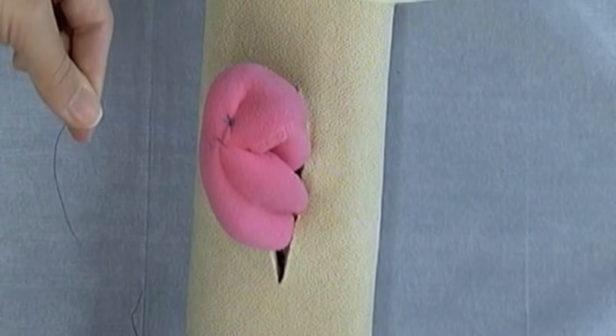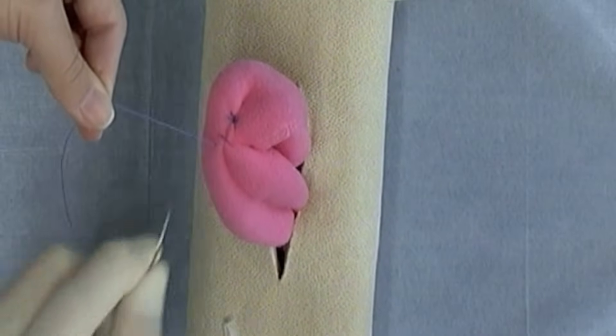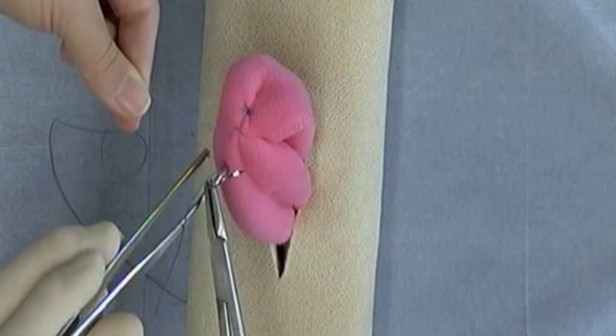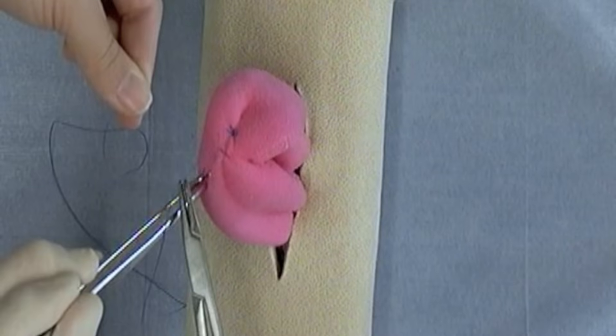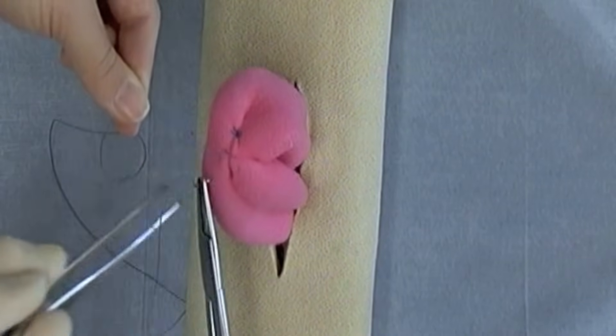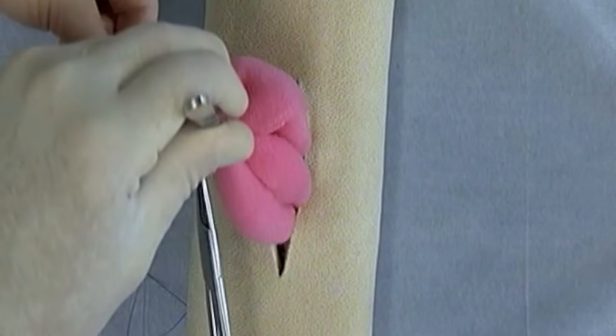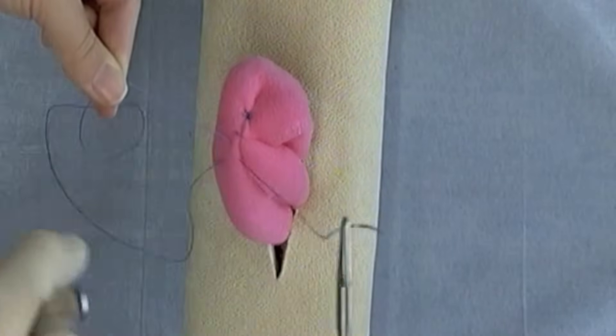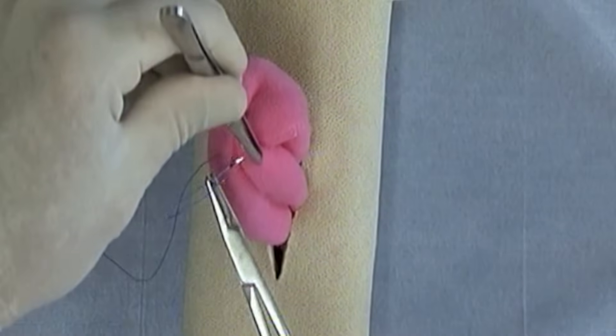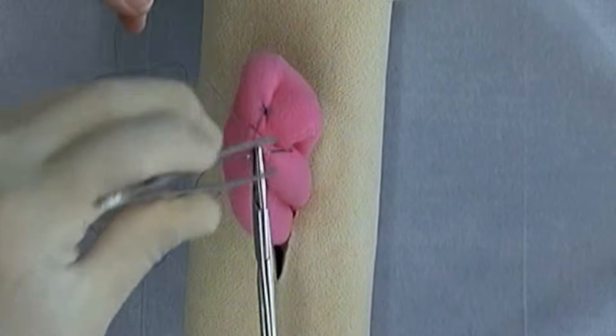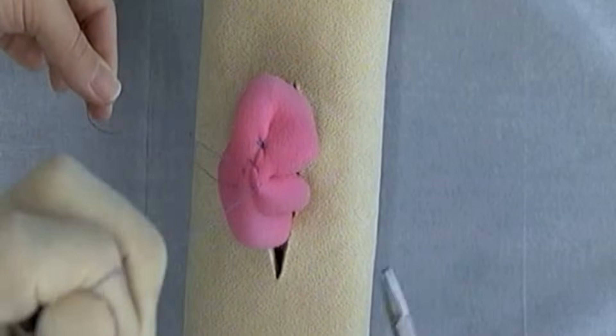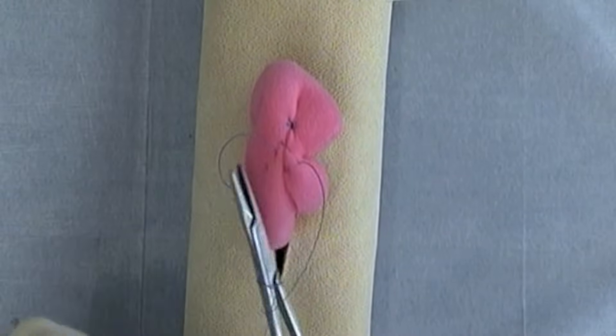And then to end this pattern I'm going to reverse and I'm going to in backhanded fashion take my final Lembert suture bite on each side, or my final bite on each side, and then tie back to the loop.